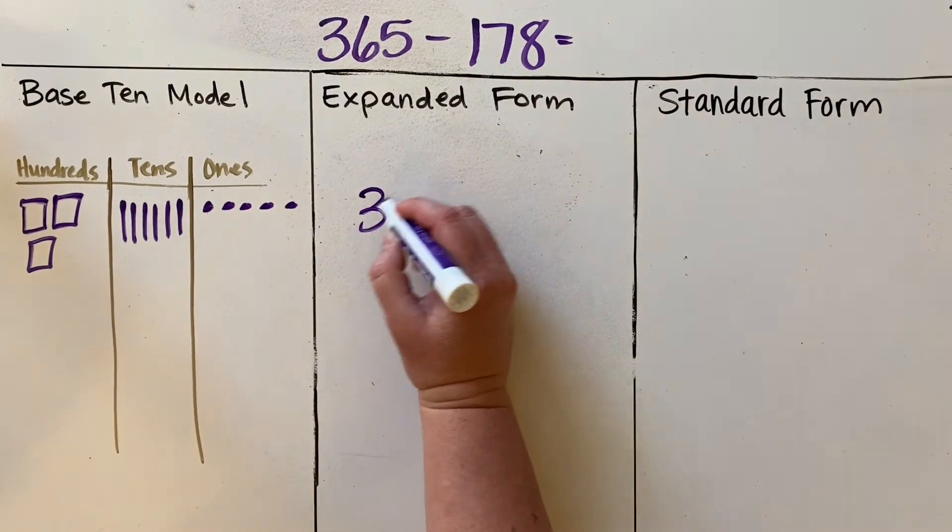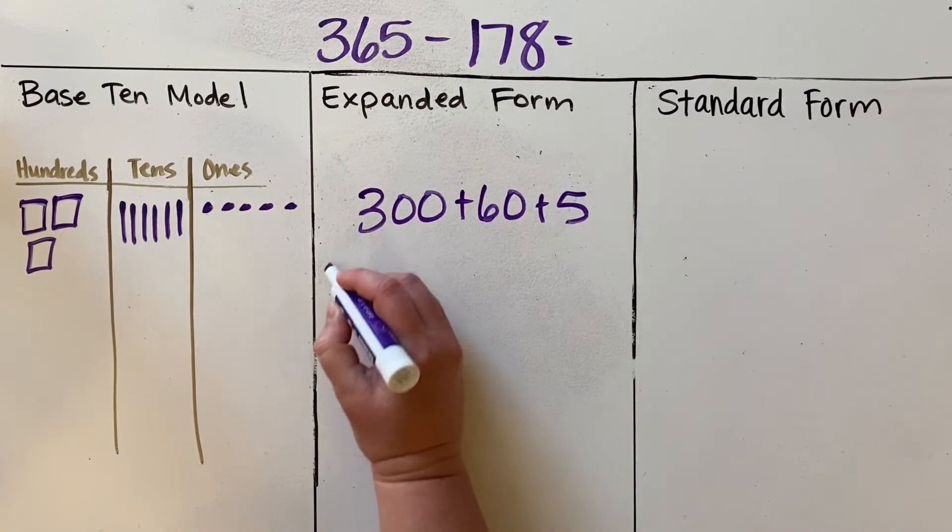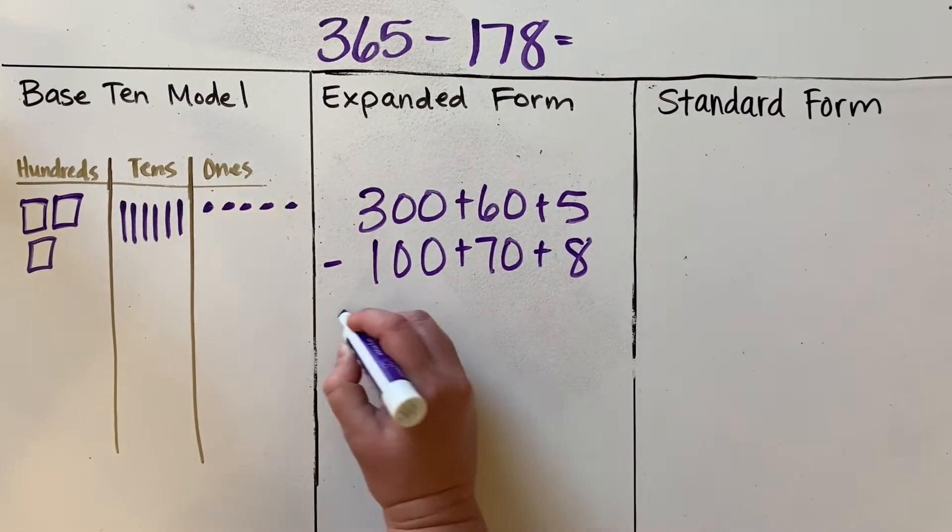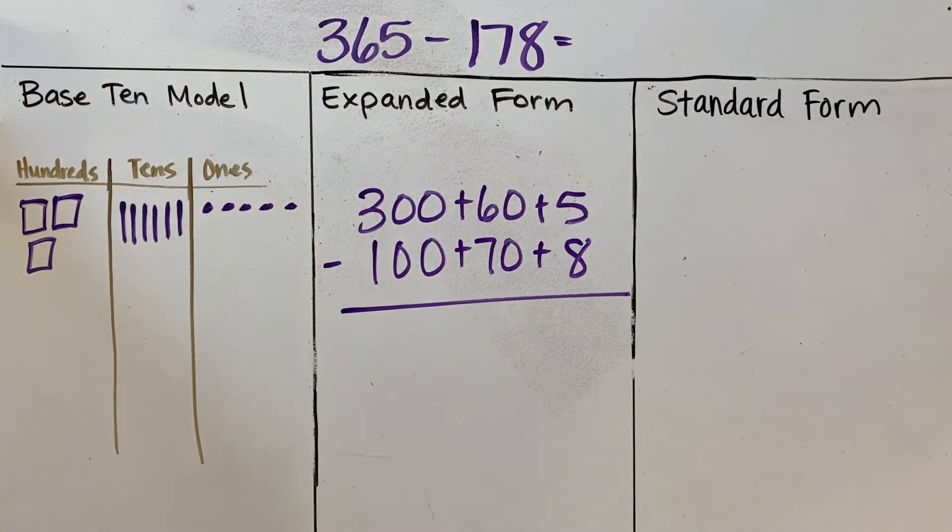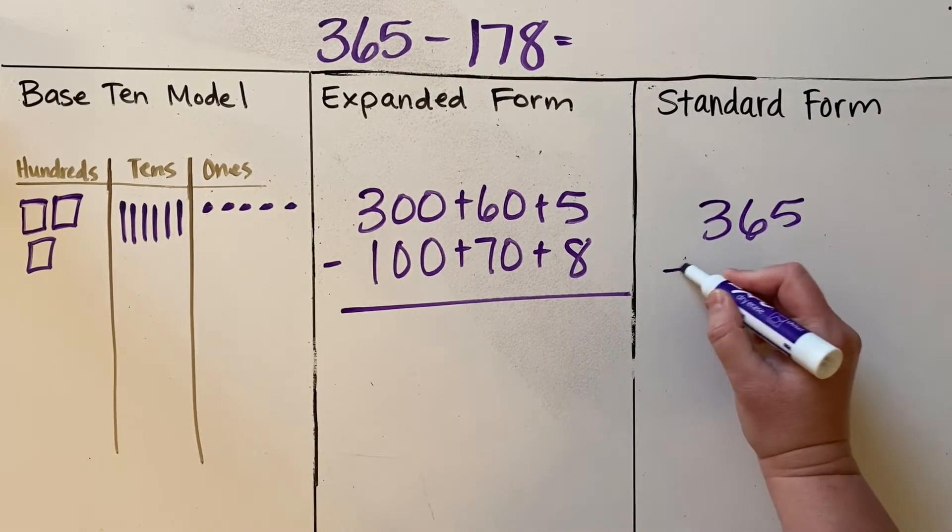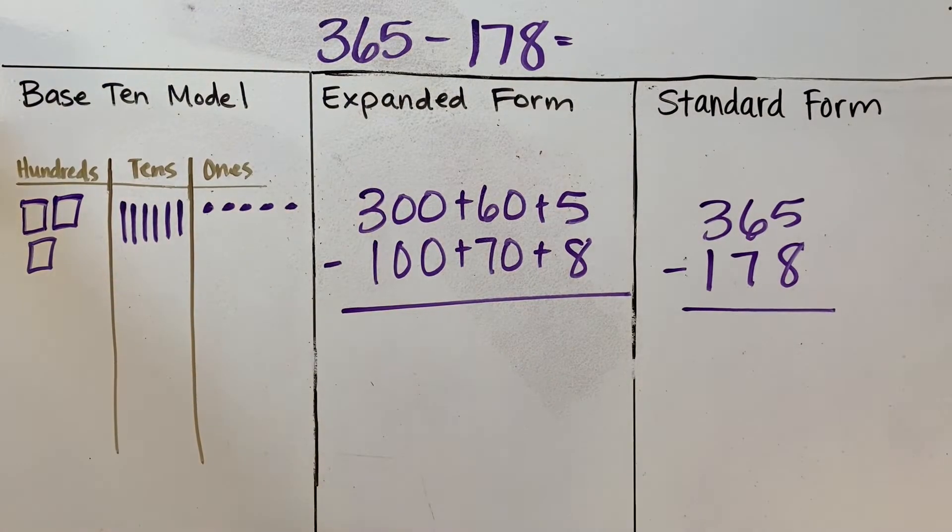In expanded form, we have 300 plus 60 plus 5, and we are subtracting 100 plus 70 plus 8. In standard form, we have 365 subtracting 178. Remember that we want to have all of these lined up by place value.